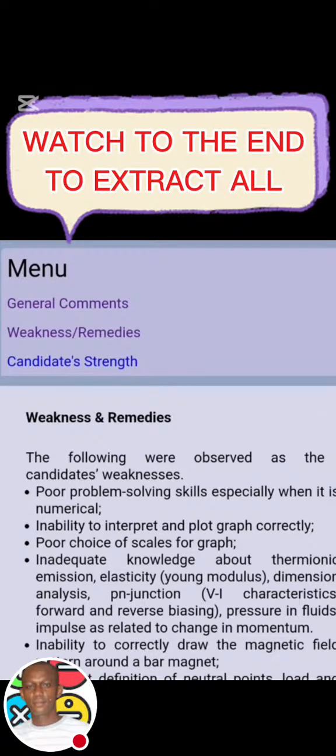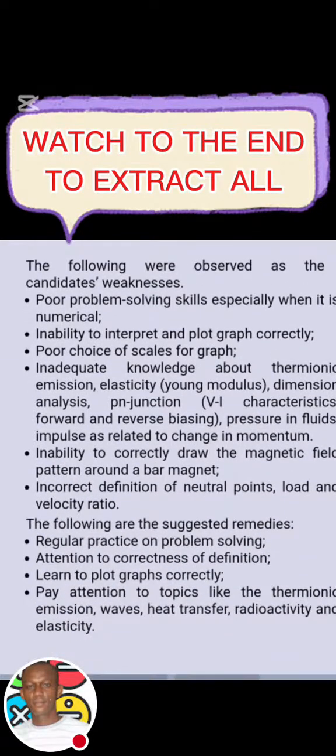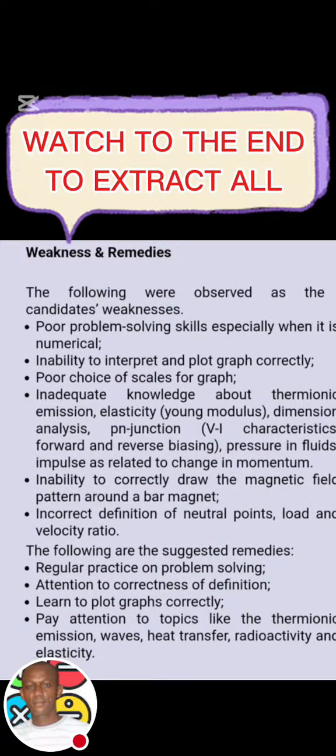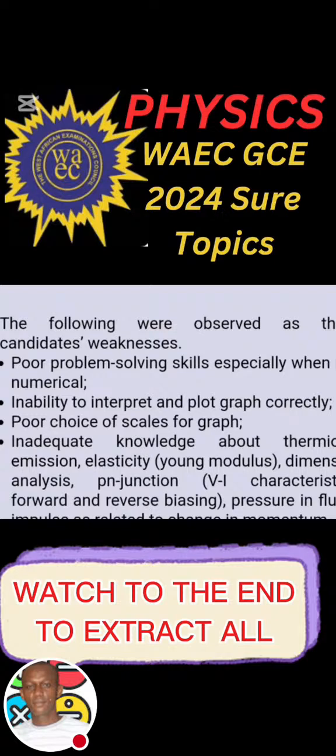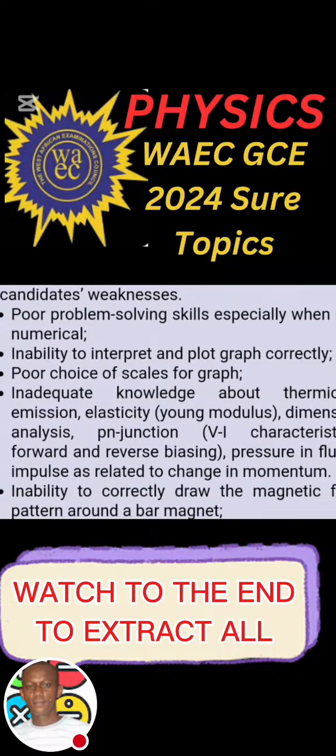They said the following were observed as candidate weaknesses. The method we'll be using is a normal method because the weakness of the previous candidates, WAEC will surely set questions on it. Look at it: inability to solve problems, poor problem-solving skills, especially when it is numerical. That's the first thing. The one that follows: inability to interpret and plot graphs correctly.